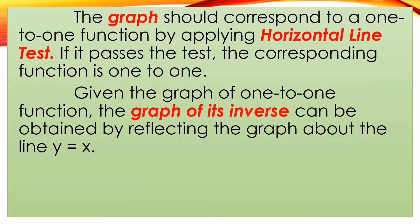The graph should correspond to a 1-to-1 function by applying the horizontal line test. By using the horizontal line test, there should be no repeated X values or Y values on the graph for it to be a 1-to-1 function. Given the graph of a 1-to-1 function, the graph of its inverse can be obtained by reflecting the graph about the line Y equals X.